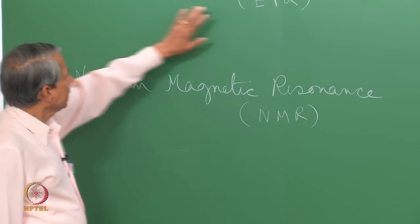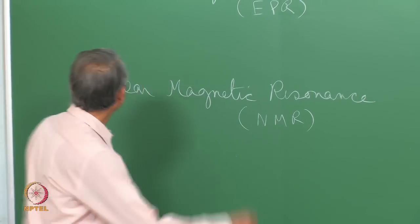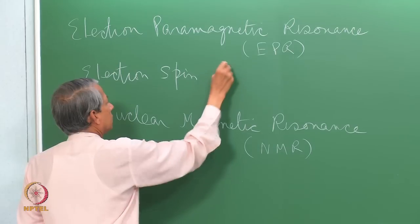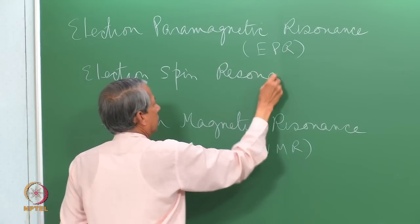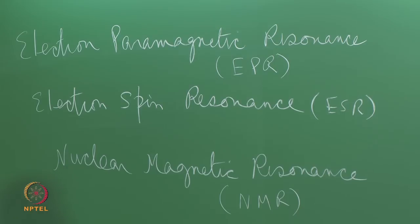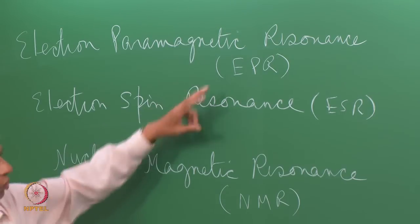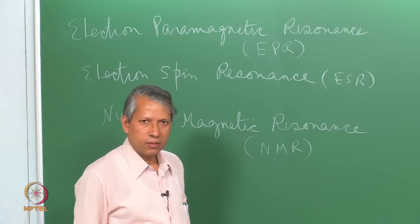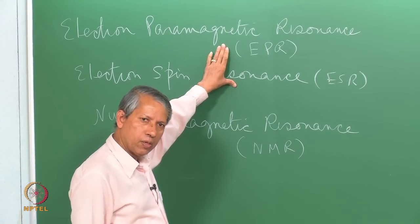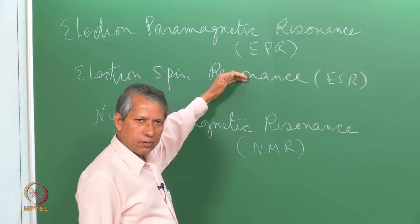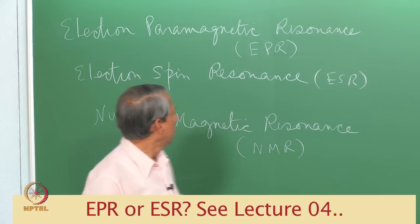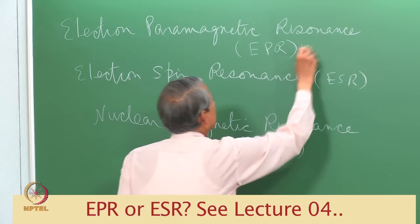Now, electron paramagnetic resonance is also known as electron spin resonance or ESR. Both are used in scientific parlance, but do they mean the same or is one terminology better than the other? These things we will see later. Right now, let us stick to this EPR.